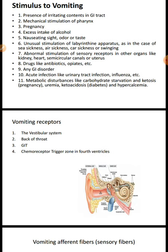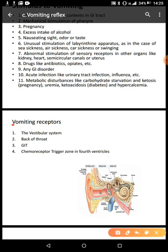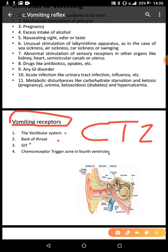Now, what are the vomiting receptors — what cells recognize the stimulus? We have receptors in the vestibular system, receptors at the back of the throat, receptors throughout the entire gastrointestinal tract, and then we also have the chemoreceptor trigger zone, also called CTZ, located in the fourth ventricle.